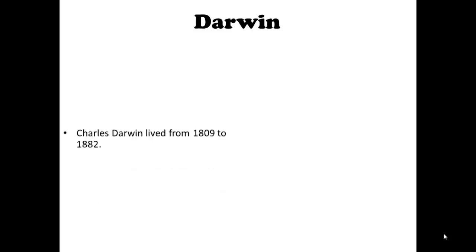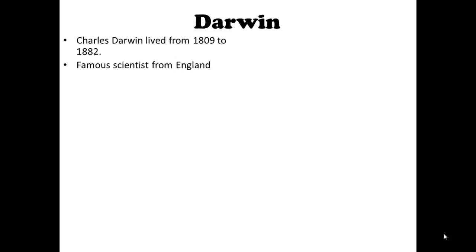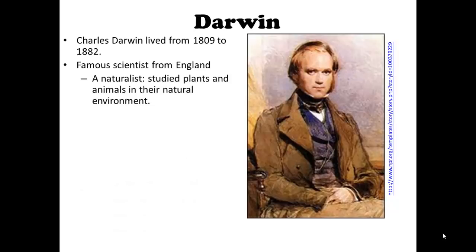Let's start with Darwin. Charles Darwin lived from 1809 to 1882, and he was a famous scientist from England. Here's an image of Darwin — looks younger in this picture. He was a naturalist, a type of scientist who specifically studied plants and animals in their natural environment.